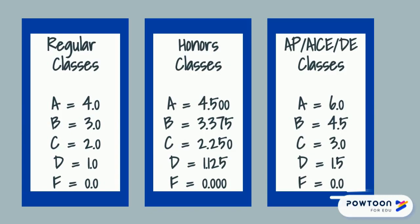AP, ACE, and dual enrollment courses are on a six-point scale — an A is worth six points, a B is worth 4.5 points, and so on. Again, to determine your GPA the total number of points is divided by the total number of courses taken.